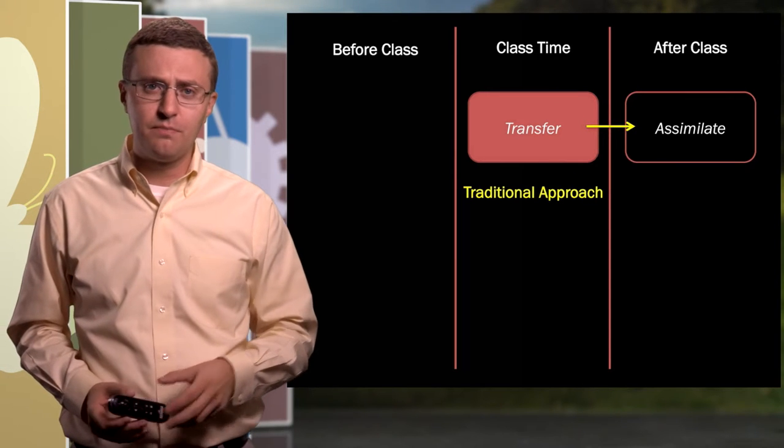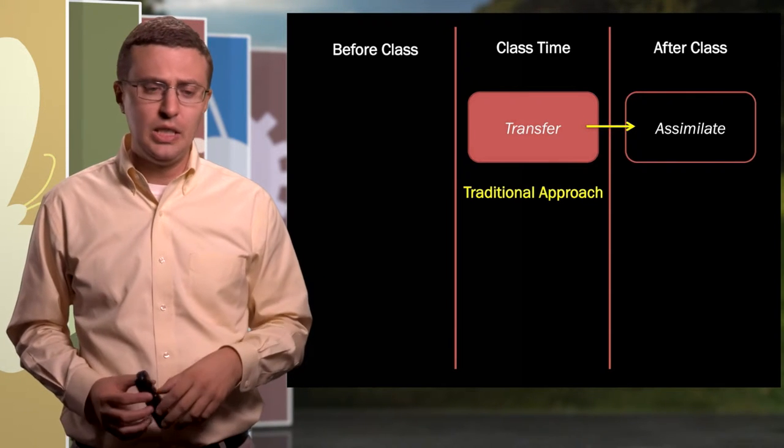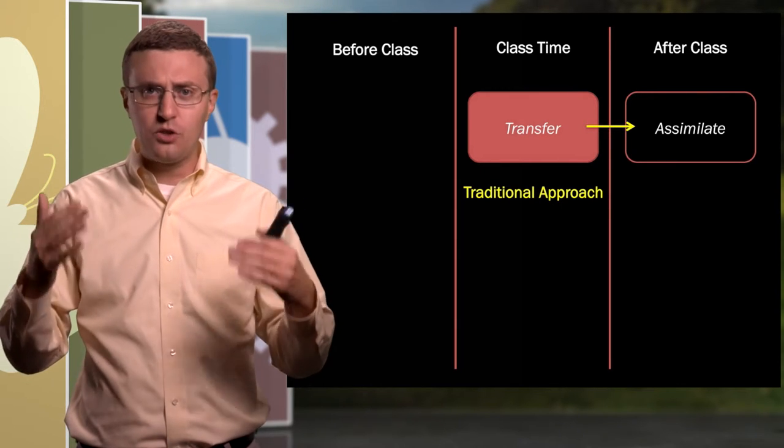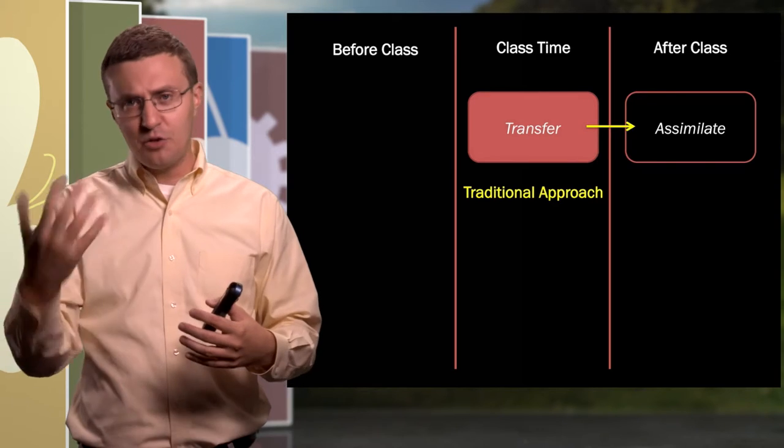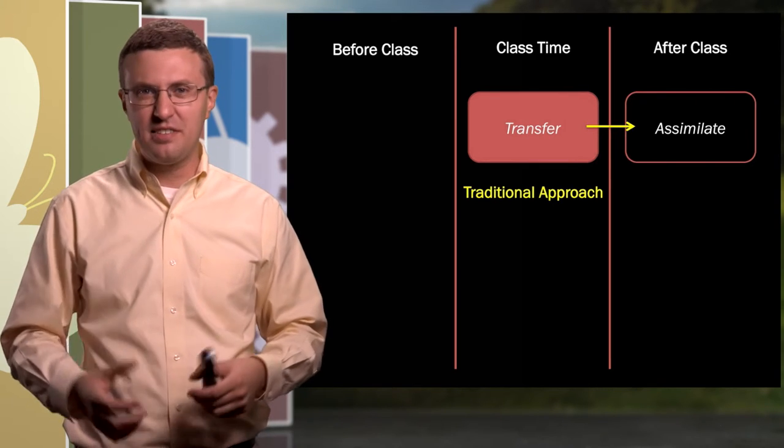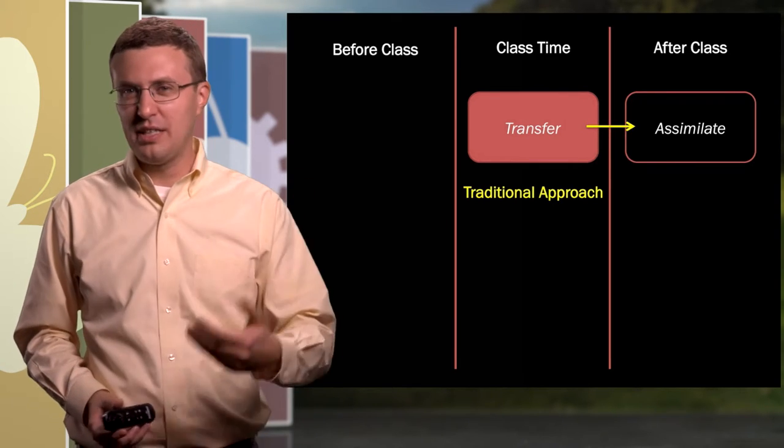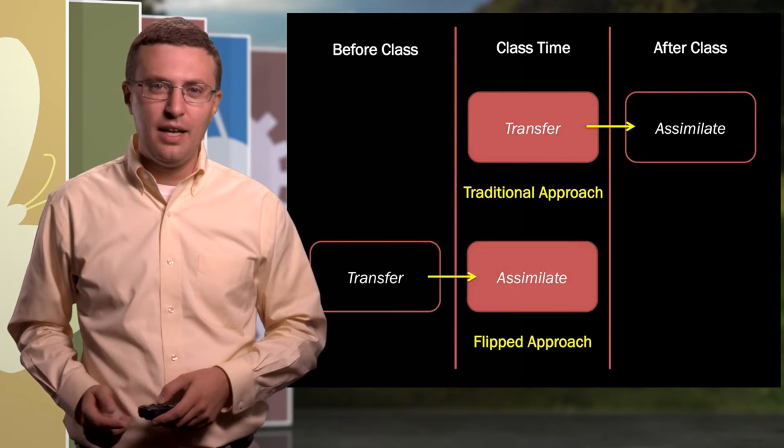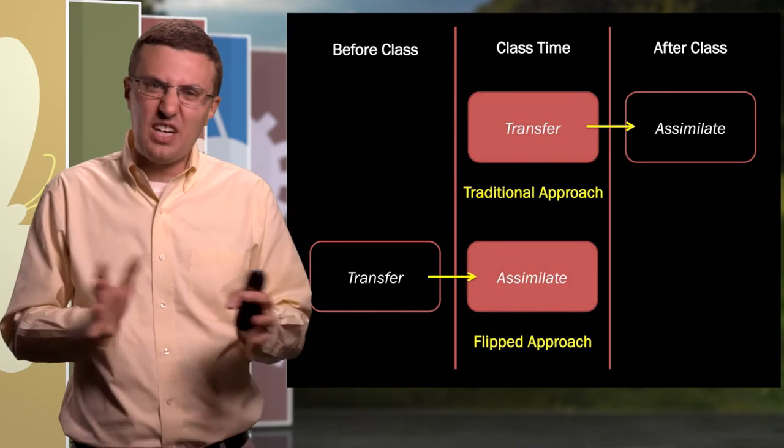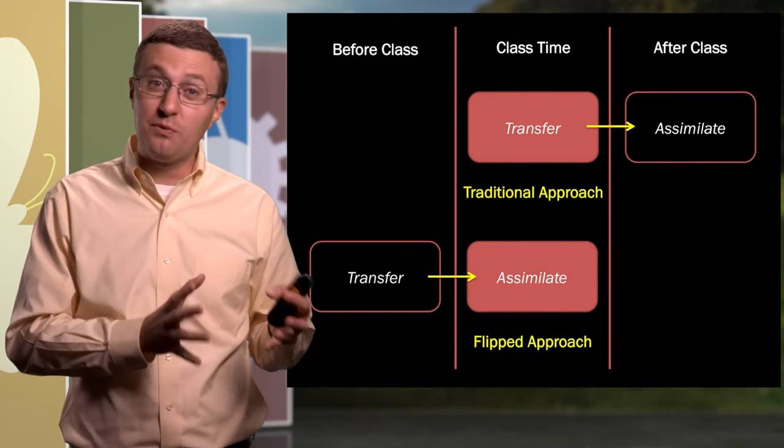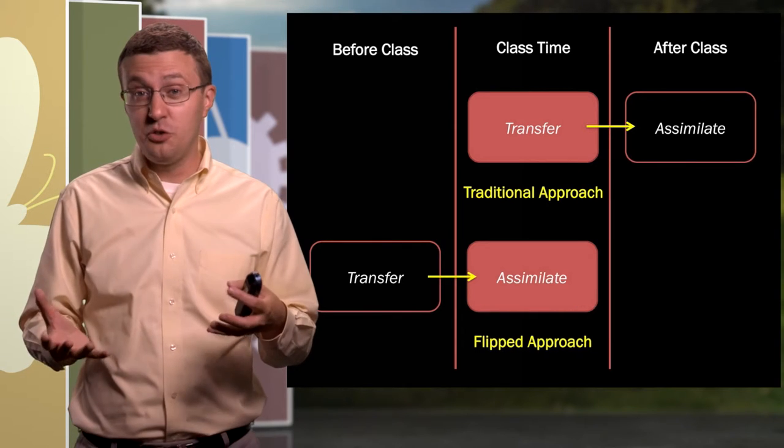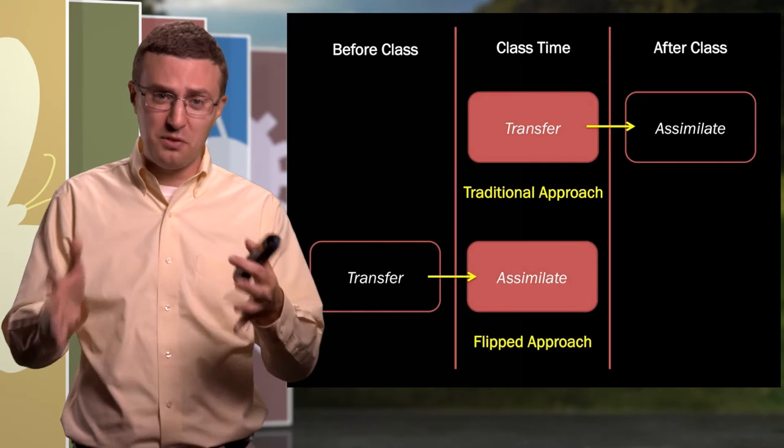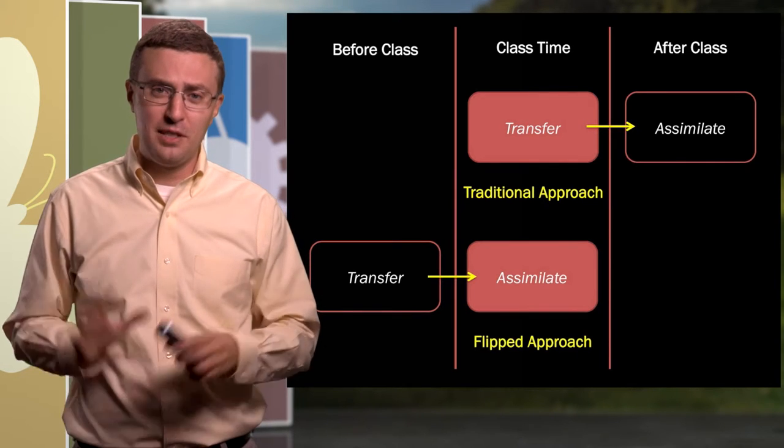Here's the way I think about the flipped classroom. So in the kind of traditional approach, the class time is spent using kind of transferring knowledge from instructor to students, usually through lecture. After class, students then take that and try to make sense of it through problem sets, try to assimilate that knowledge in one way or another. These are terms that Eric Mazur uses to describe this process. In the flipped classroom, the idea is to kind of shift that around a little bit so that the transfer stage, that first step happens before class, and then class time is used for that assimilation step. Eric Mazur likes to say that second step, that's the hardest. So let's do that together instead of separately.